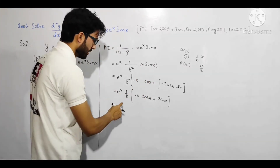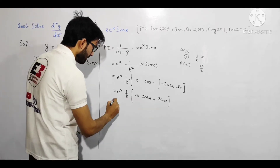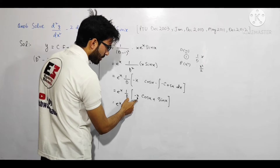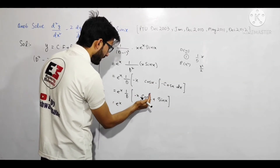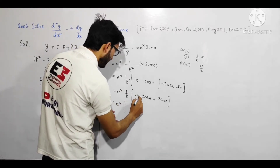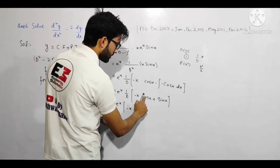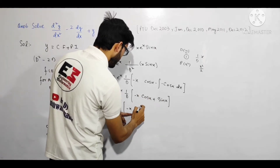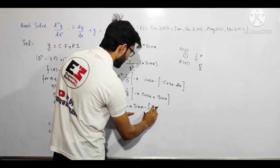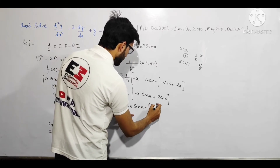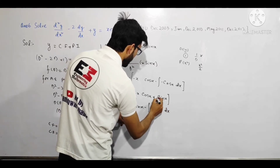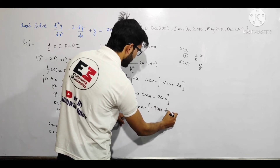Ab dobara integrate karenge. Yahan composite function hai: -x cos x + sin x. Addition rule se dono ko alag alag integrate karenge. Pehle -x cos x ka integration phir se integration by parts se — x algebraic, cos x trigonometric. Formula: first × ∫second - ∫(d/dx(first) × ∫second dx). cos x ka integration sin x, aur differentiation of x = 1, toh: -x sin x - ∫(1 × sin x dx). sin x ka integration -cos x hai.